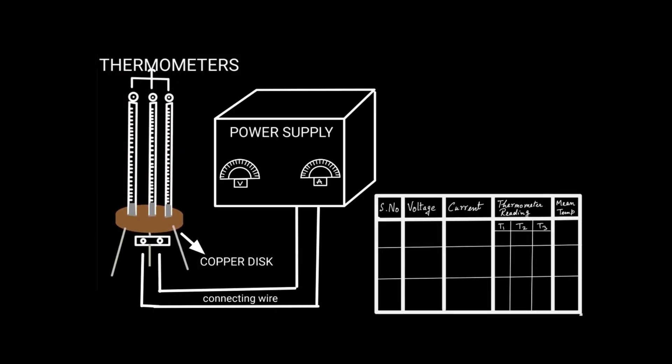Now I will explain the procedure with the help of this animation. As you can see, the three thermometers are inserted in the holes provided in the copper plate and you have to note the temperature of these three thermometers at steady state, when the temperature will be at a constant value.